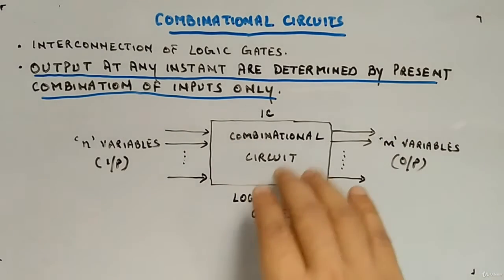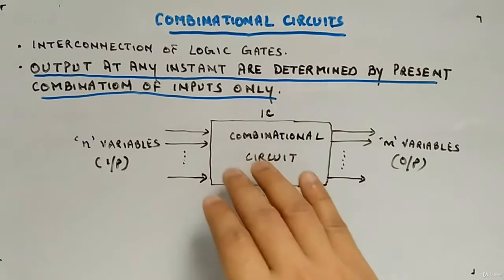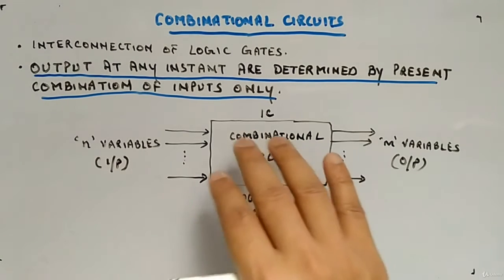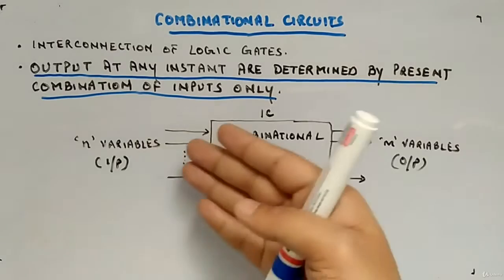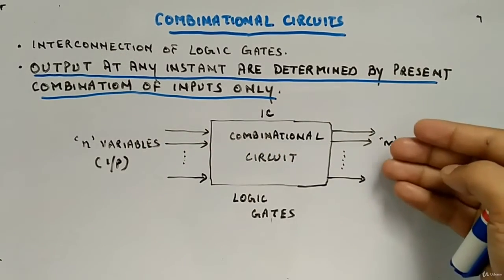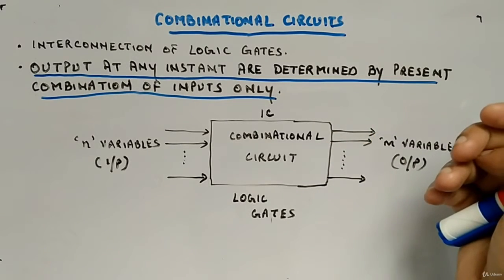So that it will take inputs and it will provide some output. Logic gates are like AND gate, OR gate, NAND gate, XOR gates. These gates will be there and they will be interconnected in some manner. That it will take inputs, these inputs and it will provide output. Some sort of functionality it will perform.